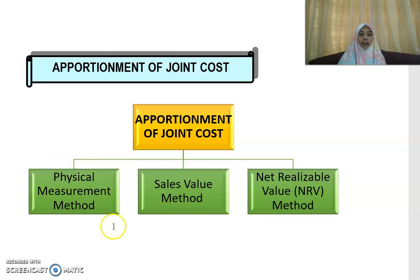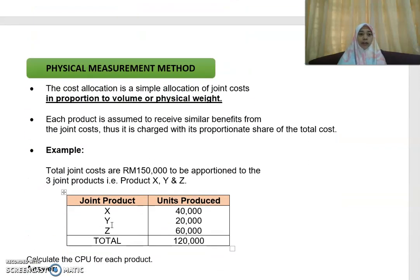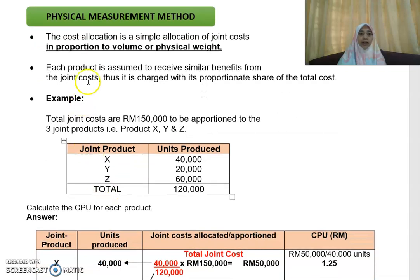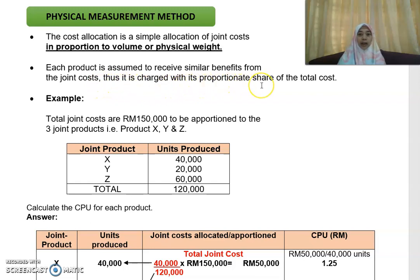First, we will look into the physical measurement method. For the physical measurement method, the cost allocation is a simple allocation of joint cost in proportion to volume or the physical weight of your product. Each product is assumed to receive similar benefits from the joint cost, and is thus charged with its proportionate share of the total cost.